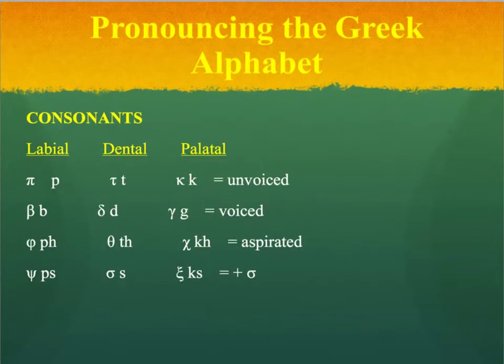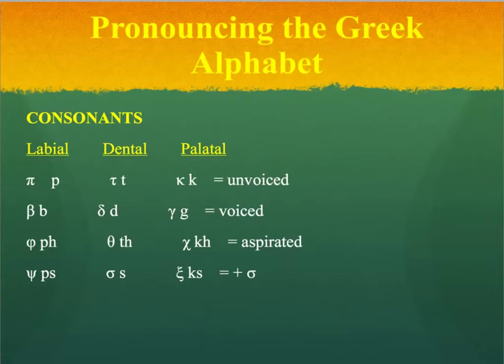So we are now up to twelve consonants. To review: Pi (P), Tau (T), Kappa (K), Beta (B), Delta (D), Gamma (G), Phi (F), Theta (TH), Chi (H), Psi (PS), Sigma (S), and Xi (X).